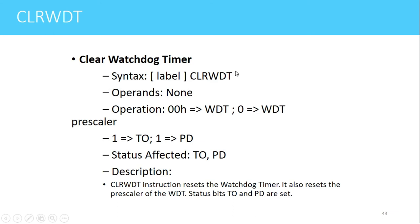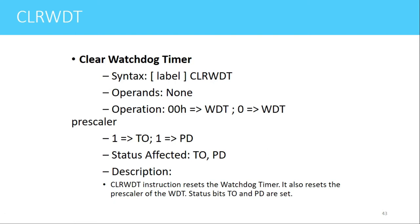CLRWDT (Clear Watchdog Timer) has no operands. When executed, it copies 00 to the watchdog timer and also clears the watchdog timer prescaler. The TO (Time-Out) bit in the STATUS register is set to 1, indicating the watchdog timer has not overflowed. The PD (Power-Down) bit in the STATUS register is also set to 1. So CLRWDT resets both the watchdog timer and its prescaler.